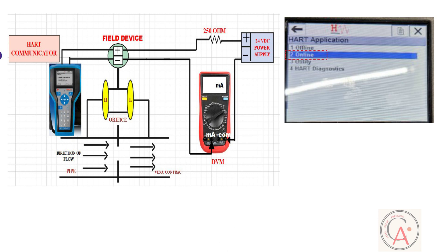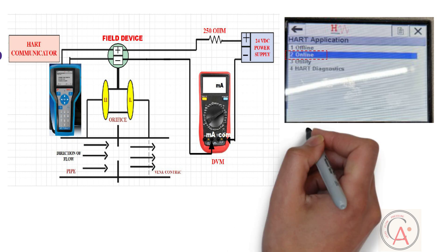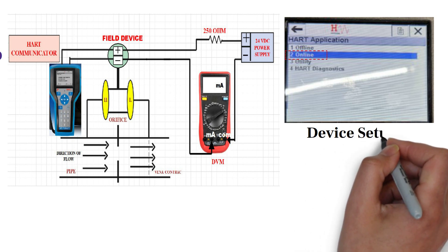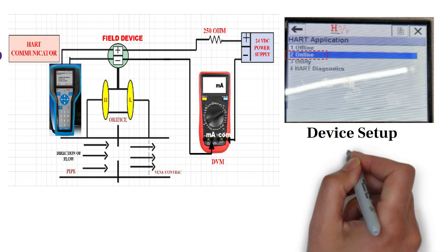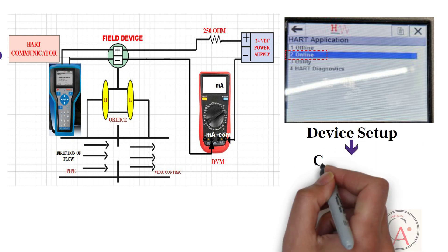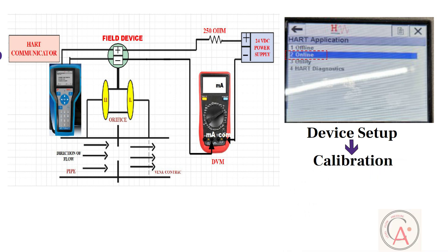In HART application, select online and press RH button to go online. When you go online, in device setup menu, you can find different options. Select calibration option and press RH button to enter in this menu.